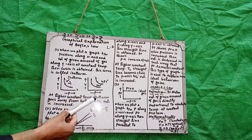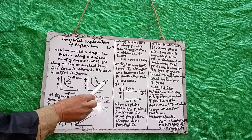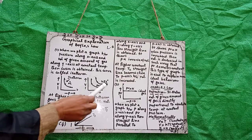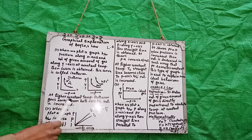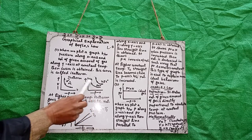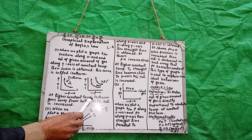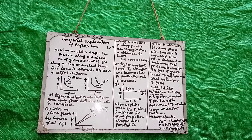Throughout the experiment, temperature is kept constant. At a higher constant temperature, say 25 degrees centigrade, the distance between the two axes and the volume is increased. This implies that volume is increasing at higher constant temperature.